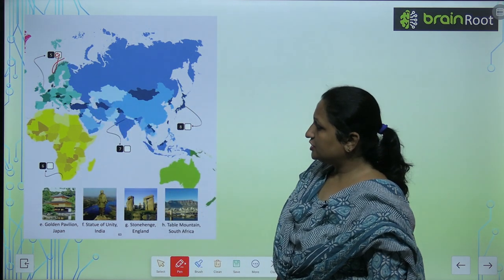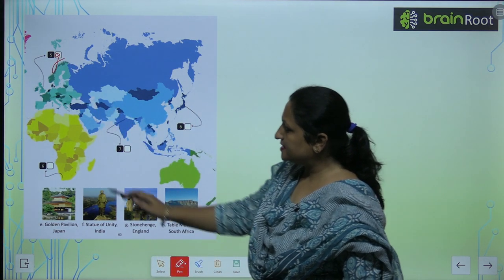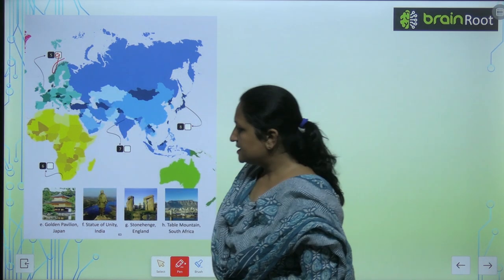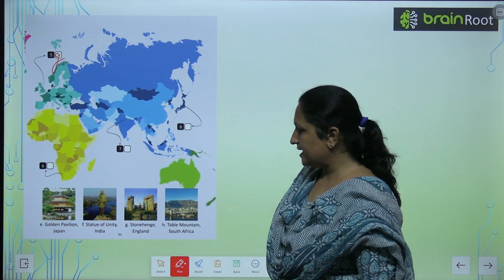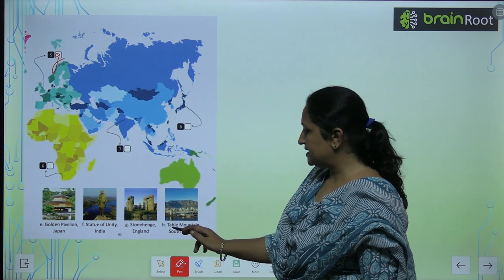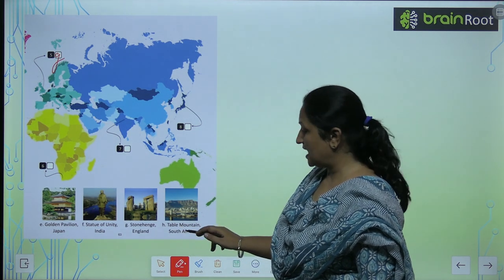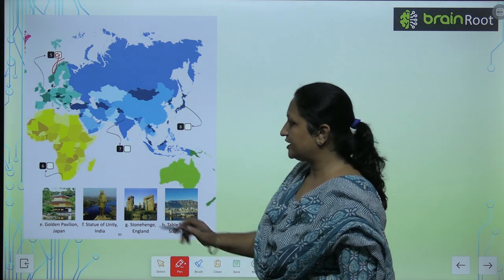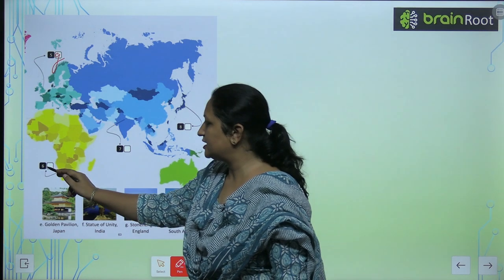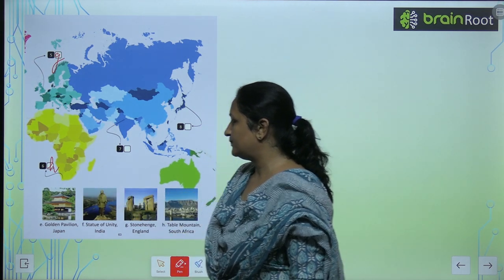After G, you come to the sixth one. What is the sixth one? The sixth one is Table Mountain, South Africa. So you will write H here.